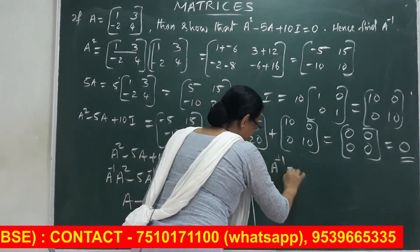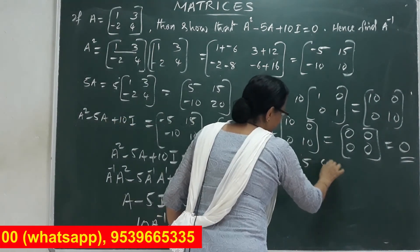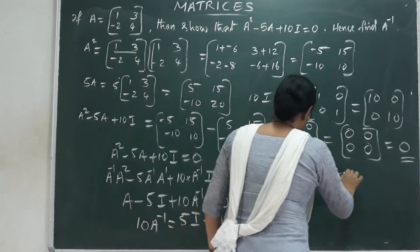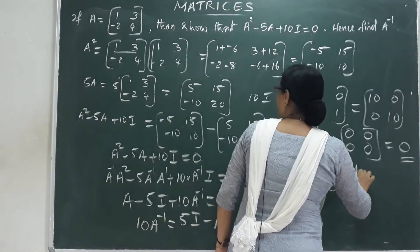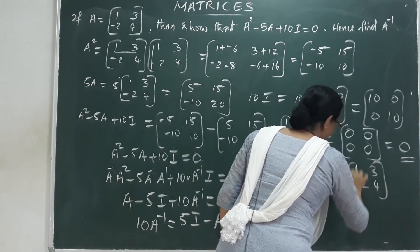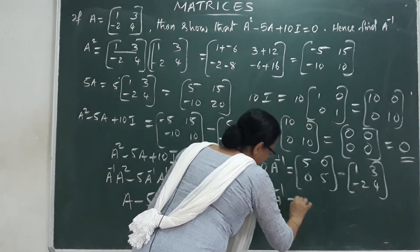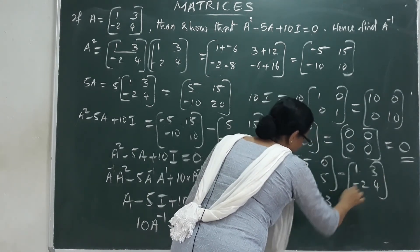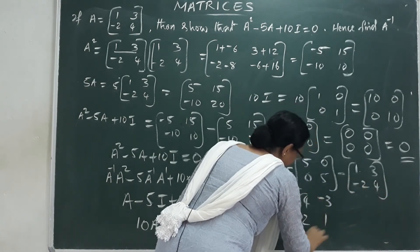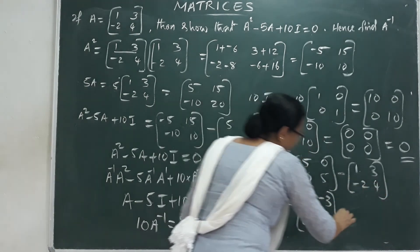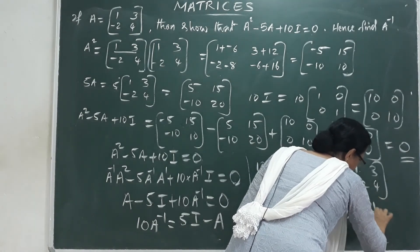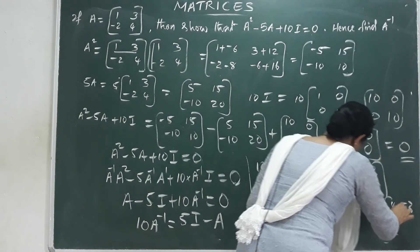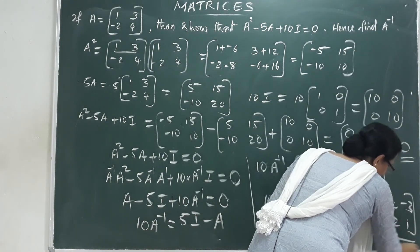So 10A inverse equals 5I minus A, that is 5×[[1,0],[0,1]] minus [[1,3],[-2,4]], giving [[5,0],[0,5]] minus [[1,3],[-2,4]] equals [[4,-3],[2,1]]. Therefore A inverse equals (1/10)×[[4,-3],[2,1]].